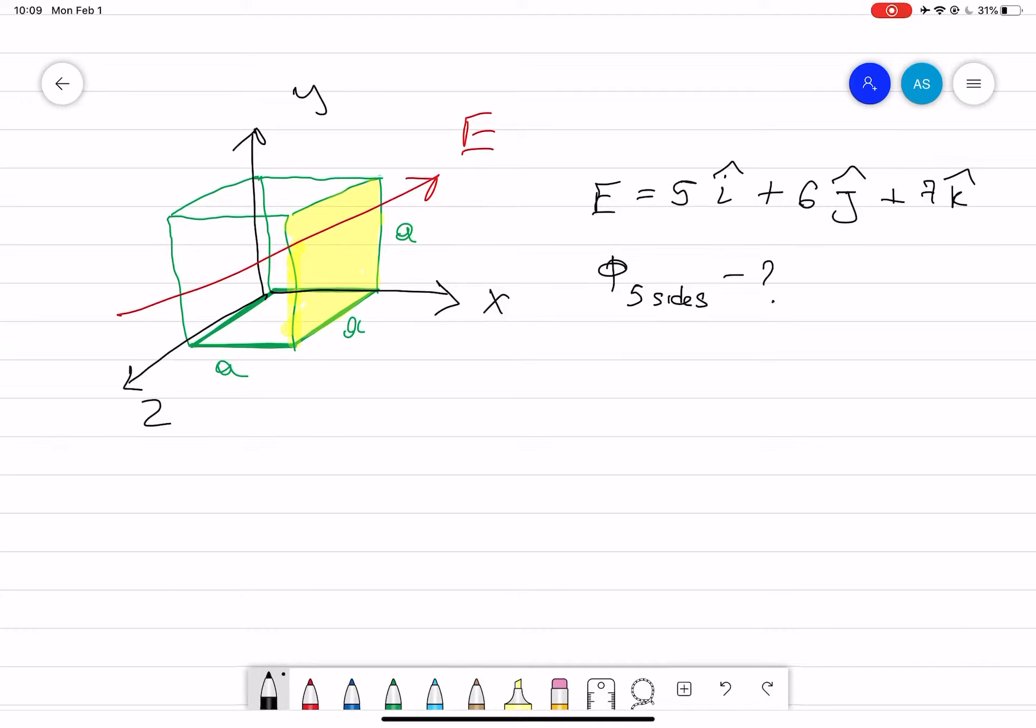Now, first of all, you have to find what will be the electric flux. Total flux is equal to zero. Or we can say that flux one plus flux of the five sides is equal to zero. That means flux one is equal to minus flux of the five sides.